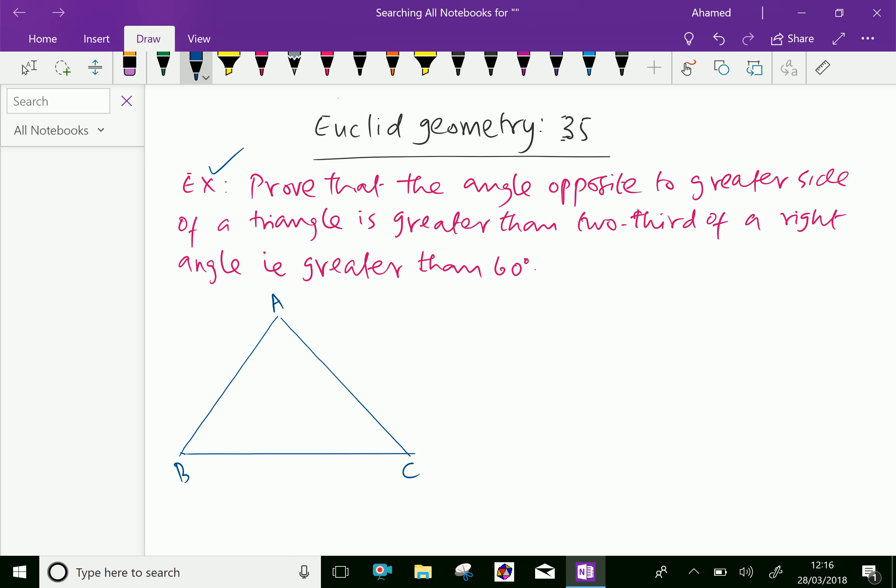Example: prove that the angle opposite to greater side of a triangle is greater than two-thirds of a right angle, that is greater than 60 degrees.